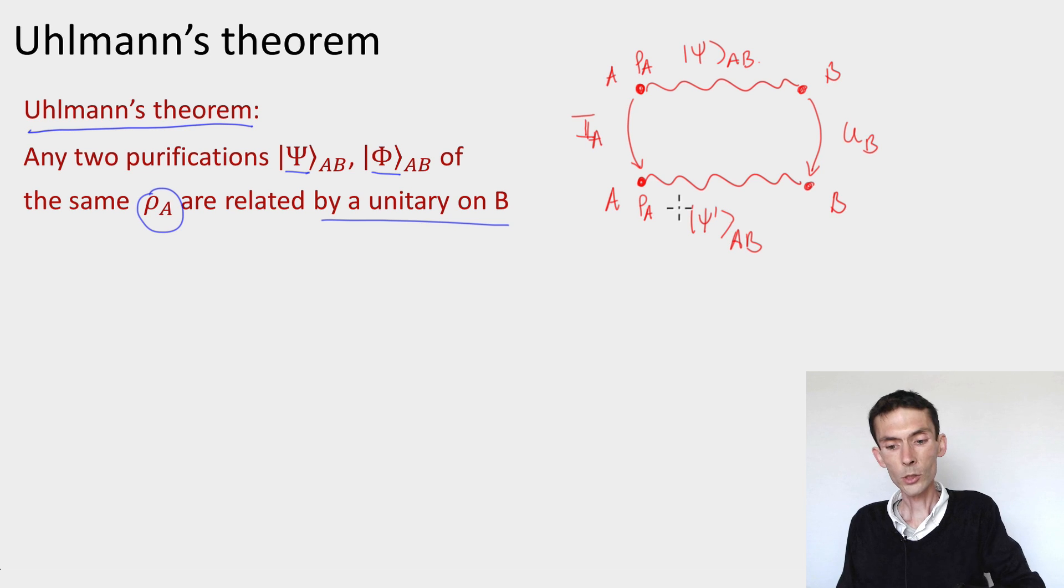If the two states have the same reduced density on A, then there are two purifications of the same state. And the theorem says that they should be related by a unitary. So this is a very powerful theorem.